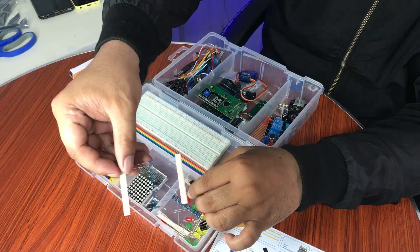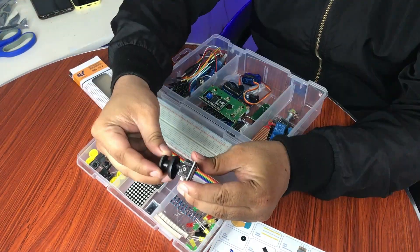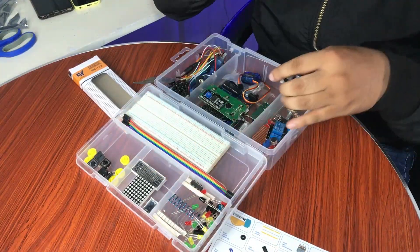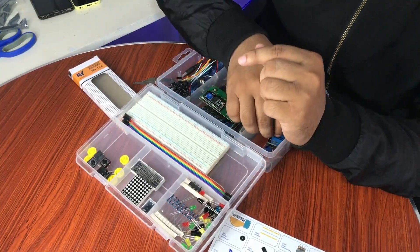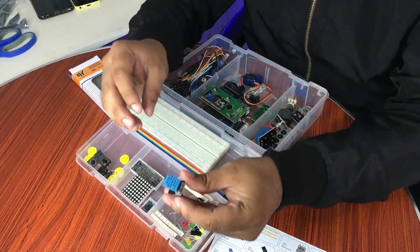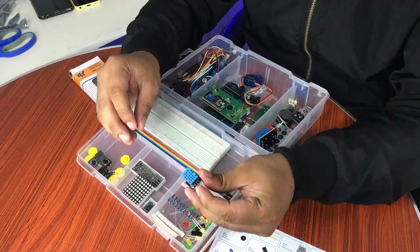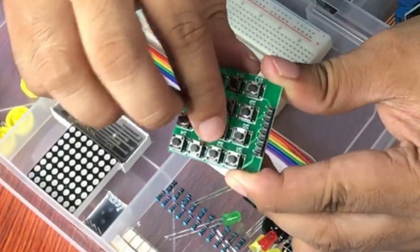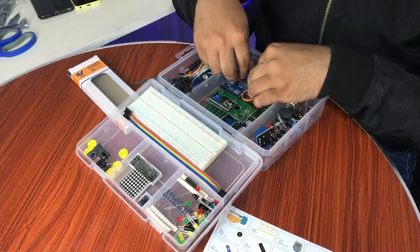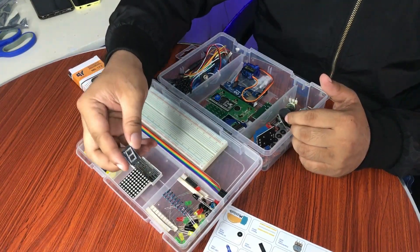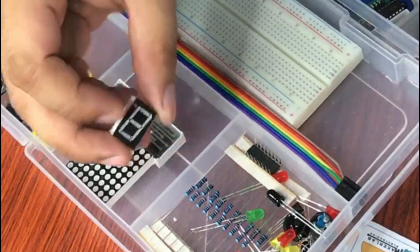We have the joystick module. The DHT11 temperature and humidity sensor, this one. The keyboard. So all in all, this is really a good product. So this is by the way the one digit 7 segment display here.